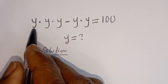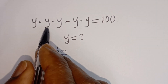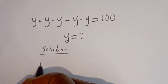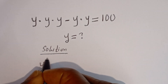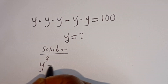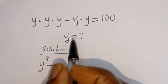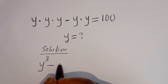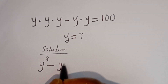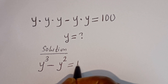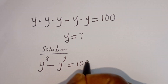Here we have y multiplied by y multiplied by y — this is y to the power of three — minus y multiplied by y, which is y squared, is equal to 100.